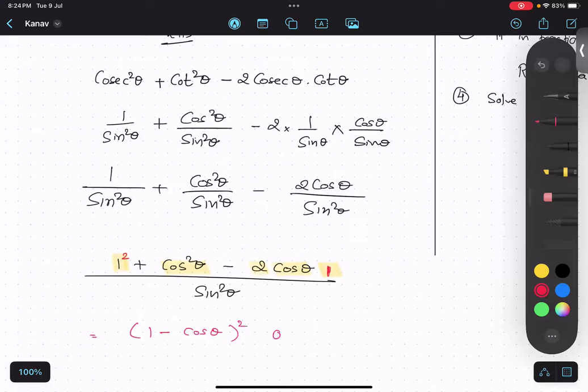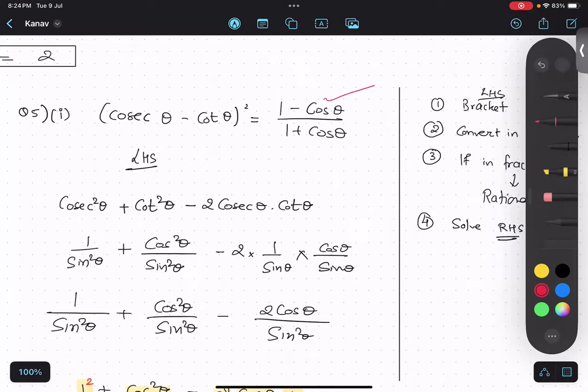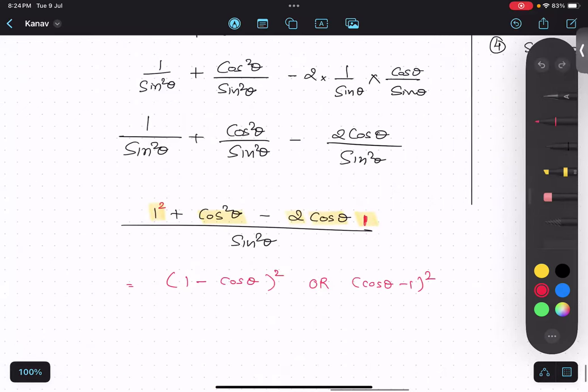Somebody can also write cos θ minus 1 whole square. Both are correct. Because I can take this thing over here and this thing over here. Now, which one I should take? Now, look at the right hand side. I need 1 minus cos. So this one I should take. I hope this logic is clear.